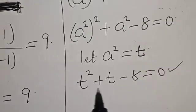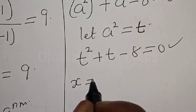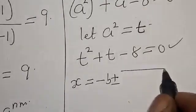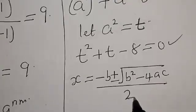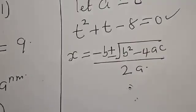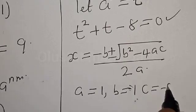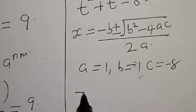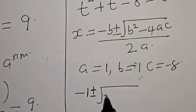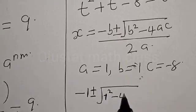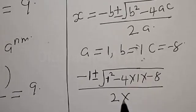This is a quadratic equation and can be solved using the quadratic formula: x equals negative b plus or minus square root of (b squared minus 4ac), divided by 2a. From here, a equals 1, b equals 1, and c equals negative 8. Then t equals negative 1 plus or minus square root of (1 squared minus 4 times 1 times negative 8), divided by 2 times 1.